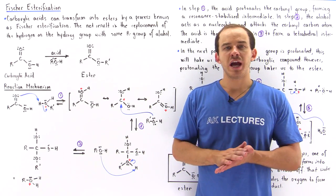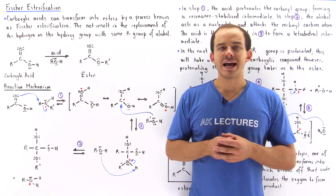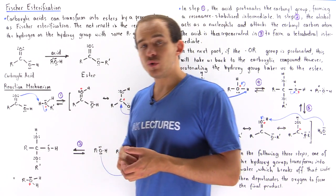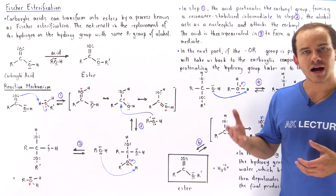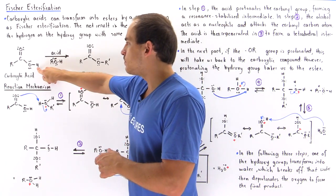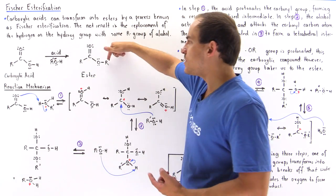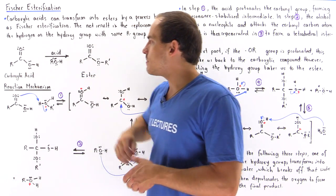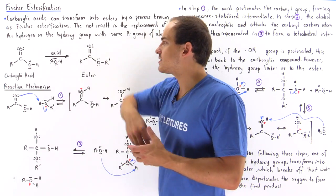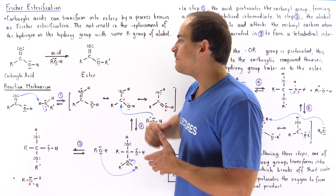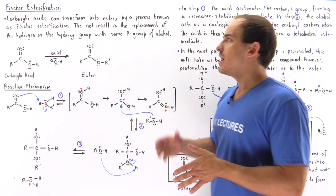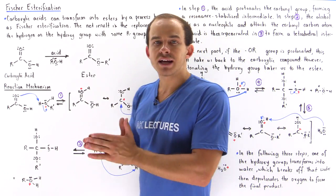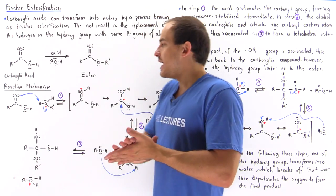One very important and interesting type of reaction that deals with carboxylic acids is known as Fischer esterification, or simply the esterification reaction. In this reaction we transform the carboxylic acid into an ester molecule. The net result is basically the replacement of the H on the carboxylic acid with a hydrocarbon R group that comes from an alcohol molecule. We take the carboxylic acid, mix it with an alcohol in the presence of an acid — so this is an acid-catalyzed reaction — and we form our ester product. In this lecture we're going to focus primarily on the reaction mechanism: why and how it actually takes place.